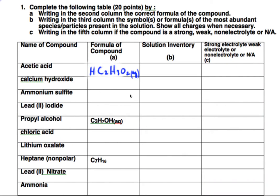We're going to do the solution inventory for these compounds. I've already written the first one out, acetic acid. We're going to make sure we put the state aqueous, meaning dissolved in water for the acid. And we're going to also note it's a weak acid.